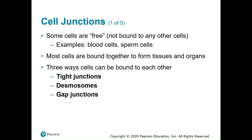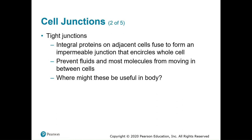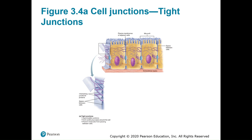Some cells are free — not bound to any other cell, like blood cells flowing through the body or sperm cells. Most cells, however, are bound together to form tissues and organs, which we'll be talking about next week. We have three types of cell junctions: tight junctions, desmosomes, and gap junctions.